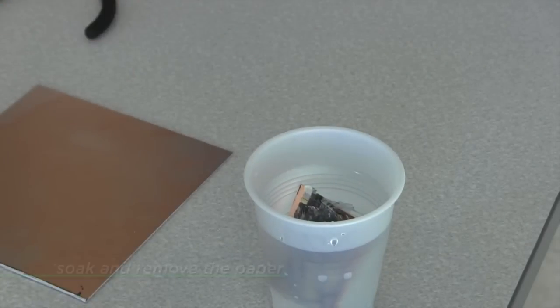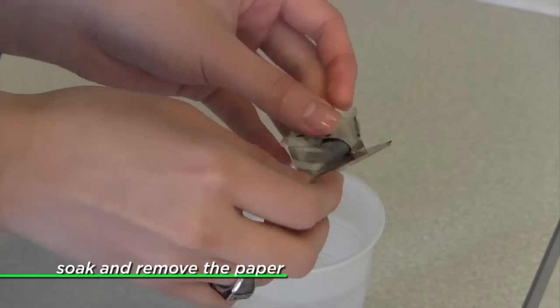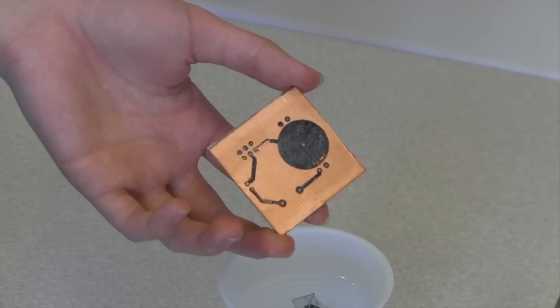To remove the paper from the copper, we dunk the entire board into water and wait a couple minutes. Then, we peel the paper right off the copper, leaving the toner against the copper.